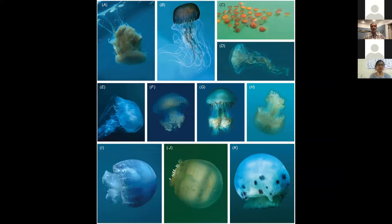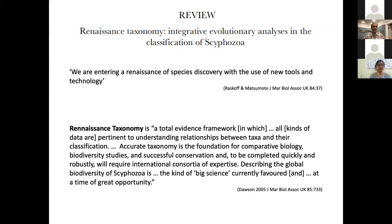Many of us will be familiar with them. This is a species of Drymonema, or lion's mane. There are Chrysaora species. These are some catsylids. These are some Stomolophus, or cannonball jellies. And I'll introduce another couple including Aurelia, the moon jellyfish, which will be familiar to all of you later on in the talk.